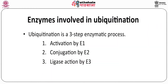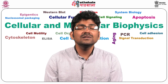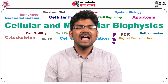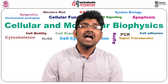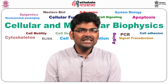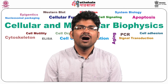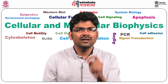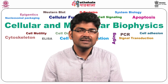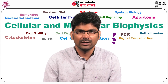Ubiquitination is a three-step enzymatic process. The three steps are activation, conjugation, and ligation, catalyzed by three enzymes E1, E2, and E3. Activation is catalyzed by E1, also known as ubiquitin-activating enzyme. There is only one E1 enzyme in the human body. E1 binds to ATP, magnesium, and ubiquitin; ubiquitin is then added to the cysteine residue of E1 via a thioester bond to the SH group. ATP is hydrolyzed to AMP and inorganic pyrophosphate, and hydrolysis of this pyrophosphate makes the reaction irreversible.